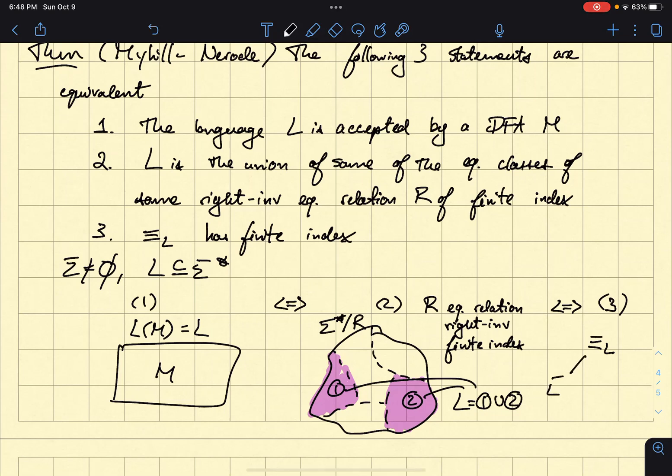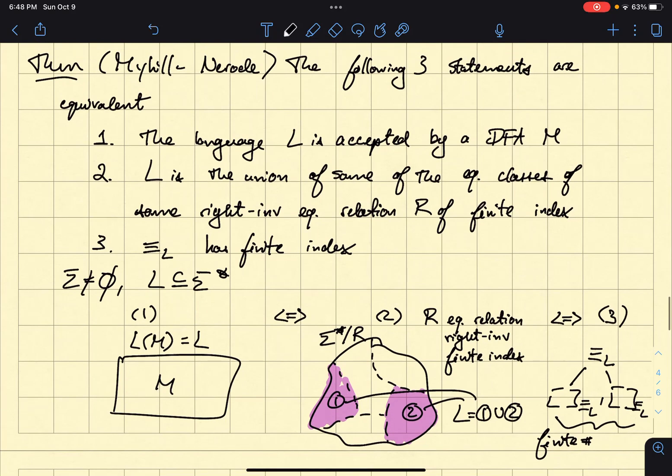So if you think of its equivalence classes like this, then it has a finite number of these. So it has a finite number of equivalence classes. Okay. That's what this theorem is saying.